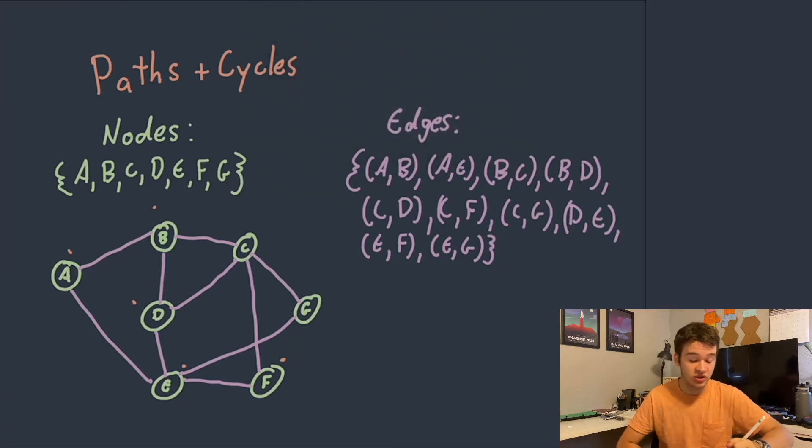The other thing we're going to talk about here are cycles. So what cycles are are simply paths where there is an edge that connects the last node back to the first node. So one example of a cycle right here could be A, B, D, E because then there's also that final edge right here that we see that connects E right back to A.